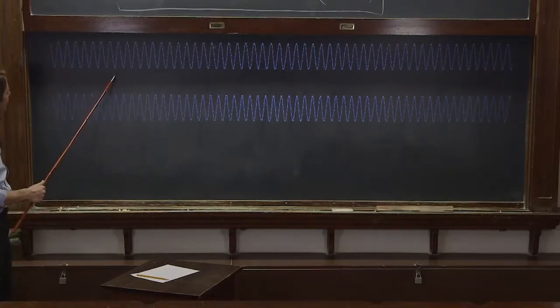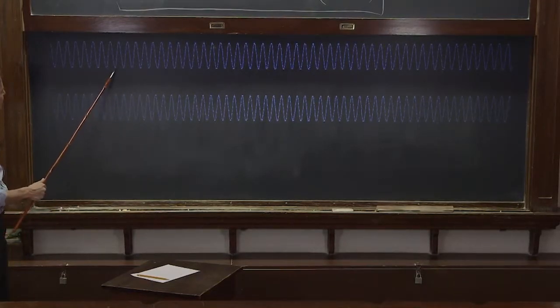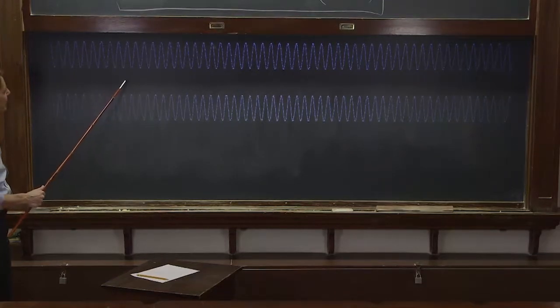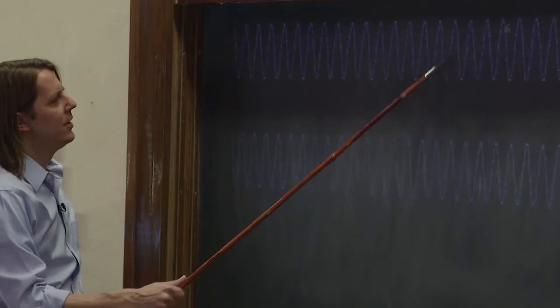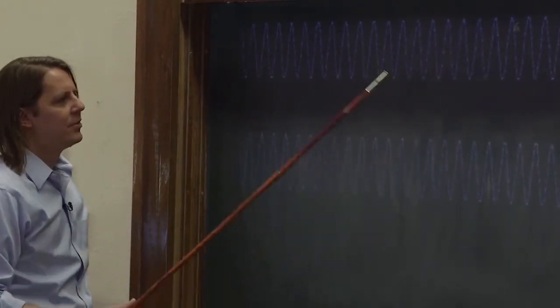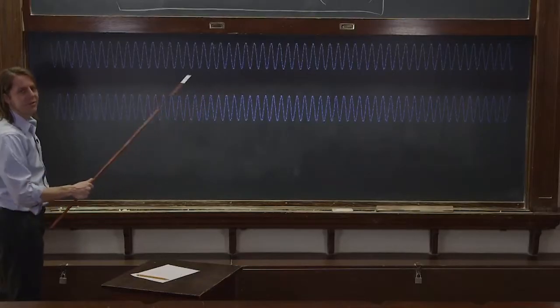Like right here, they're out of phase. This negative is right above that positive. But then since they propagate at slightly different frequency, they end up in phase again. This high positive is above that high positive. So they go in and out, in and out, in and out, because they have slightly different frequencies.